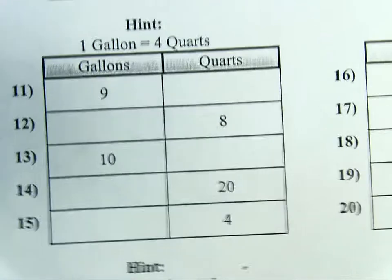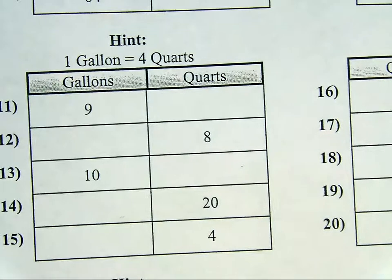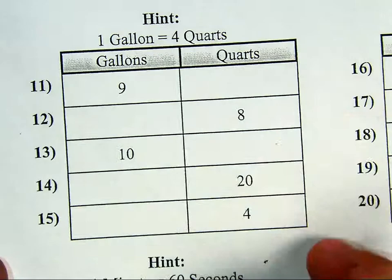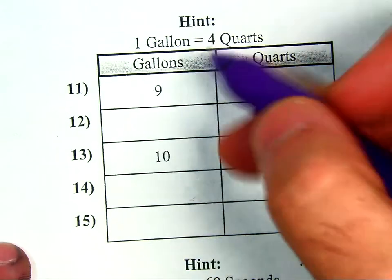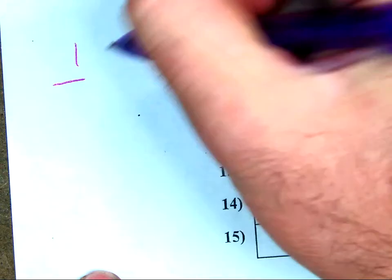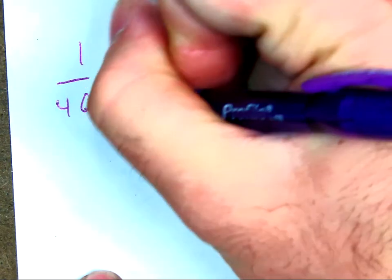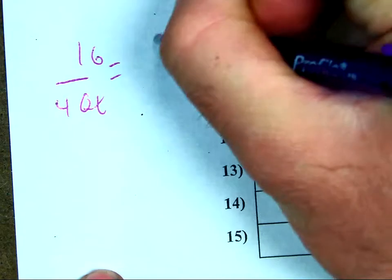If I know there are 4 quarts in 1 gallon, I have to convert back and forth. If I have 9 gallons, if I have 1 gallon equals 4 quarts and I have 9 gallons,